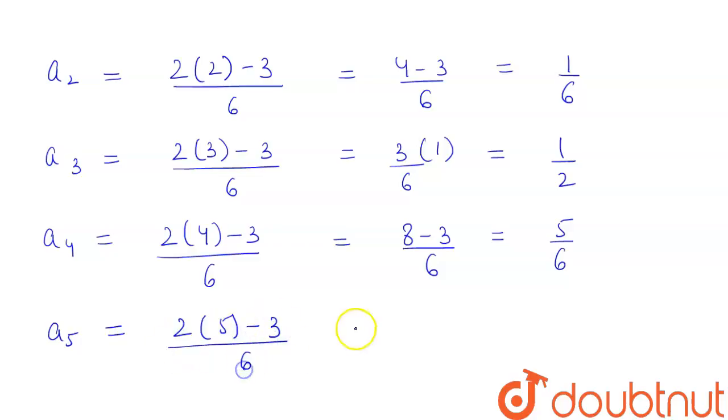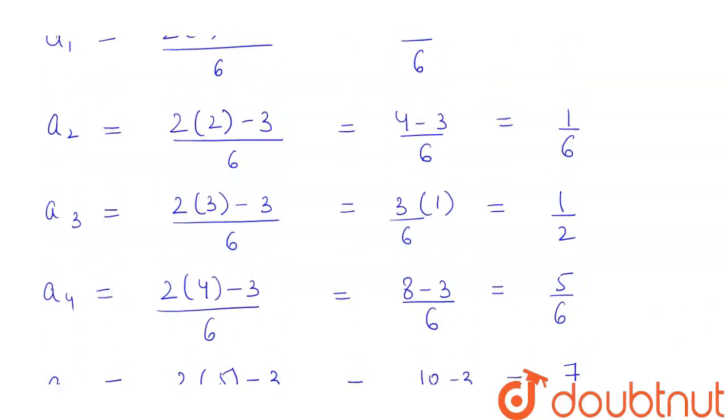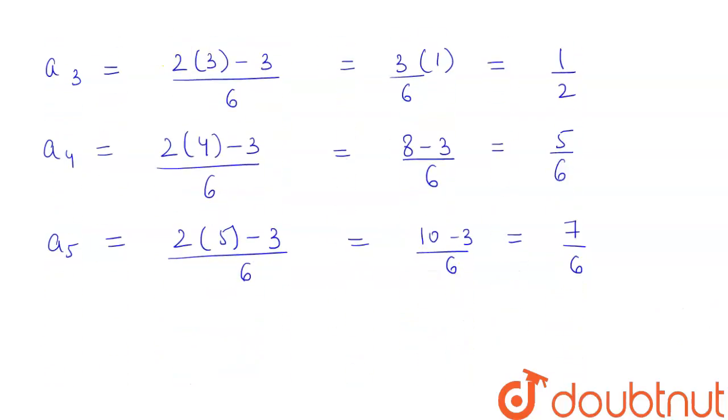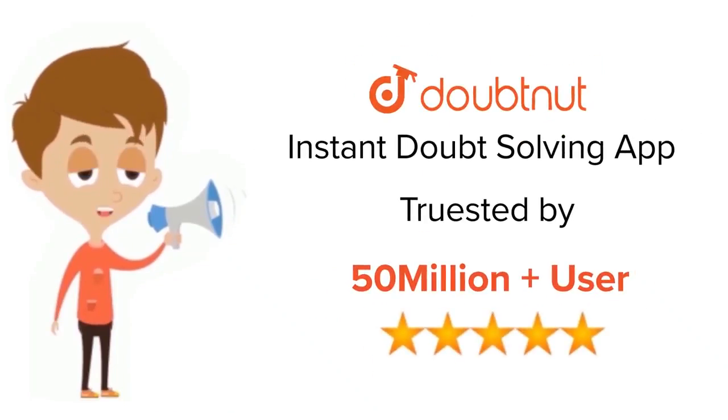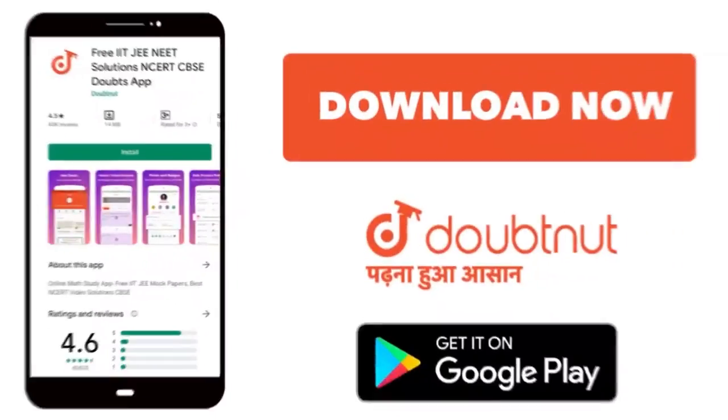And lastly, the value of a5 will equal 2(5) - 3 divided by 6, which equals 10 - 3 divided by 6, which equals 7/6. Hence we have found our five terms of this series, so this is our required answer for class 6 to 12, IIT-JEE, and NEET level. Trusted by more than 5 crore students. Download Doubtnet app today.